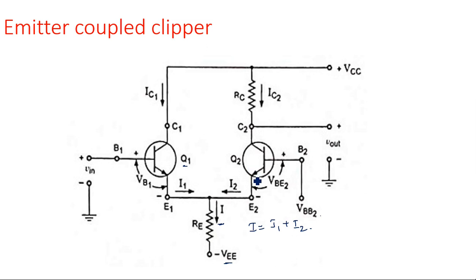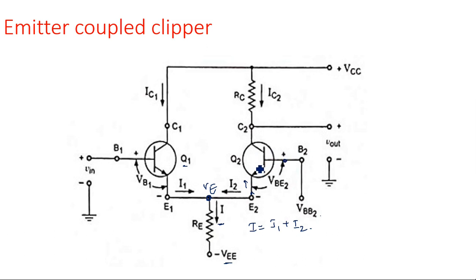Although VBB2 is set to keep Q2 in the active region, the emitter potential VE also matters. VE depends on the status of Q1. If Q1 is more on, the emitter current IE flows through RE, so VE = IE × RE increases. As the emitter voltage rises, the junction voltage VBE2 reduces, and Q2 can move toward cutoff. If VE is very small, Q2 remains in the active region.